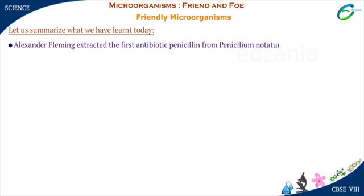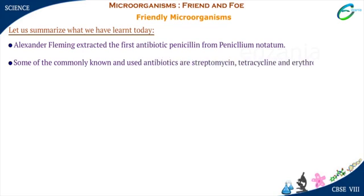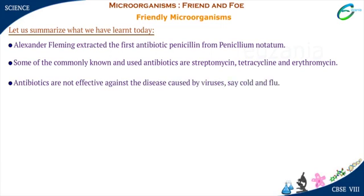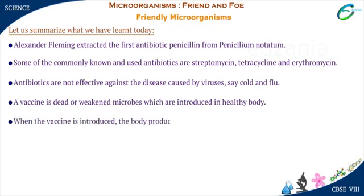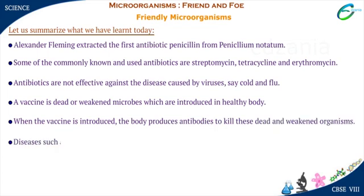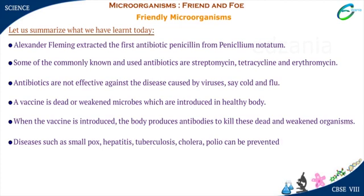Alexander Fleming extracted the first antibiotic, Penicillin, from Penicillium notatum. Some of the commonly known and used antibiotics are streptomycin, tetracycline, and erythromycin. Antibiotics are not effective against diseases caused by viruses, such as cold and flu. A vaccine is dead or weakened microbes which are introduced into a healthy body. When the vaccine is introduced, the body produces antibodies to kill these dead and weakened organisms. Diseases such as smallpox, hepatitis, tuberculosis, cholera, and polio can be prevented by vaccination.